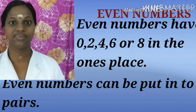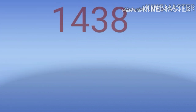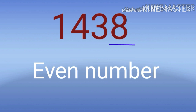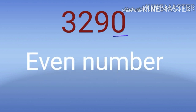That means even numbers can be put into pairs. Here we have one example: 1438. Here the number in the ones place is 8, so we can say that 1438 is an even number. Another example is 3290. Here the digit in the ones place is 0, so we can say that this number is an example for even number.